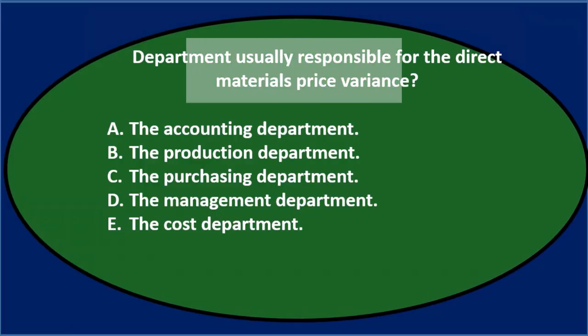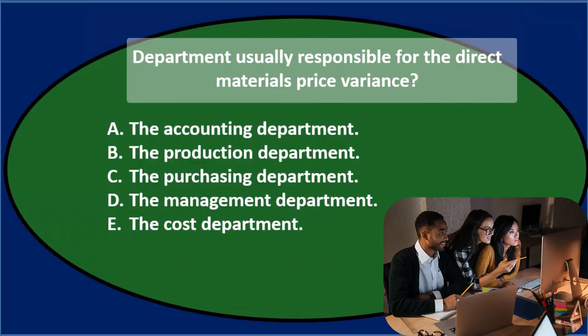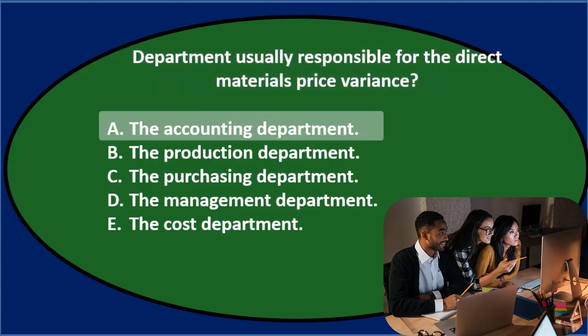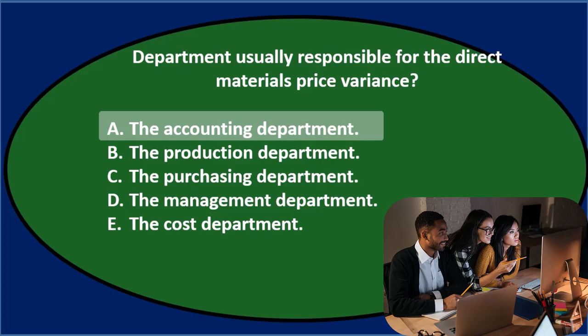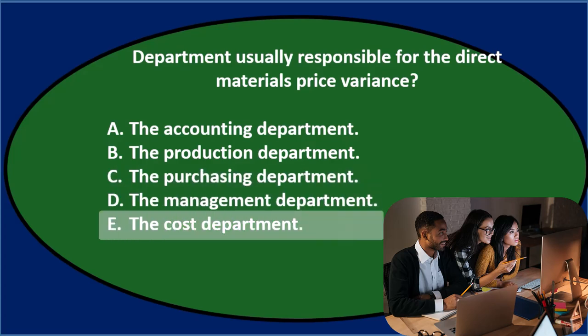First question: the department usually responsible for the direct materials price variance. The options are A, the accounting department; B, the production department; C, the purchasing department; D, the management department; or E, the cost department.